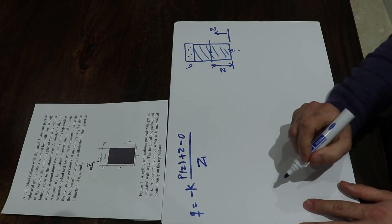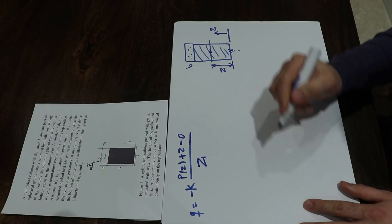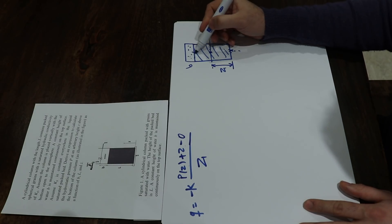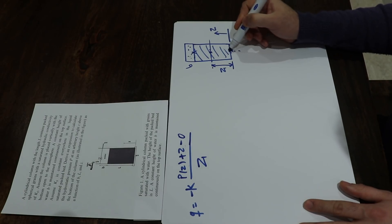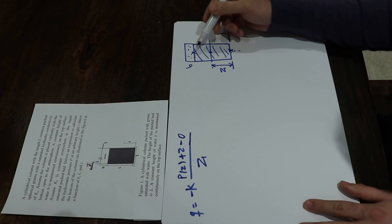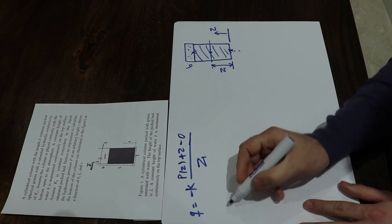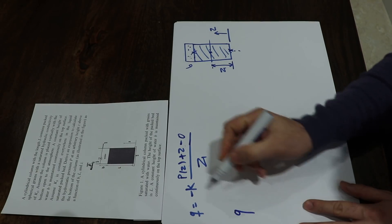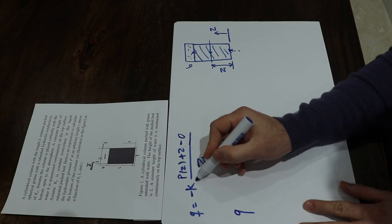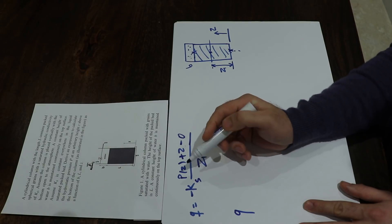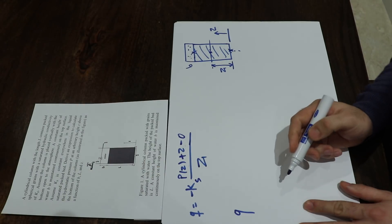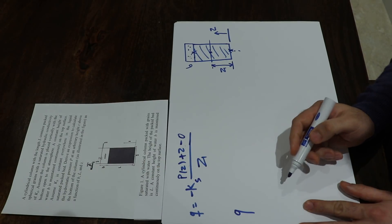On the other hand, you can write Darcy's Law between the inlet and the outlet, because the flux is the same. By the way, it should be minus Ks, because the saturated hydraulic conductivity is denoted by Ks.